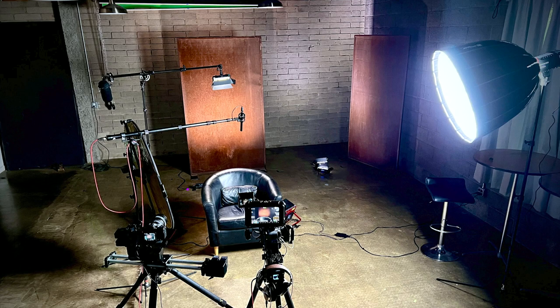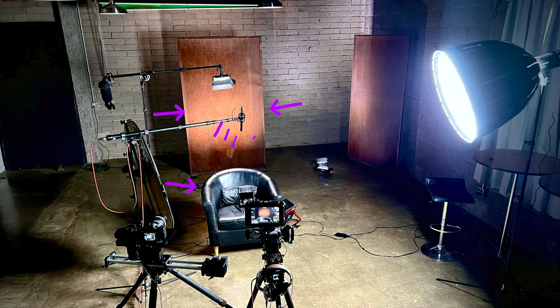For our second setup we simply moved one of the rusted panels to the middle right behind our interviewee, and we added a light bar just so that we can splash some light on this rusted panel. We used the blocks to kind of frame the interviewee.